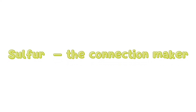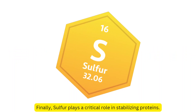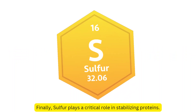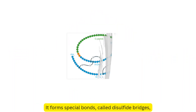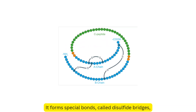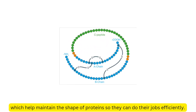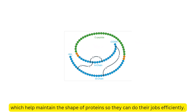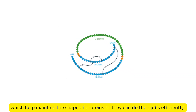Sulfur — the connection maker. Finally, sulfur plays a critical role in stabilizing proteins. It forms special bonds called disulfide bridges, which help maintain the shape of proteins so they can do their jobs efficiently.